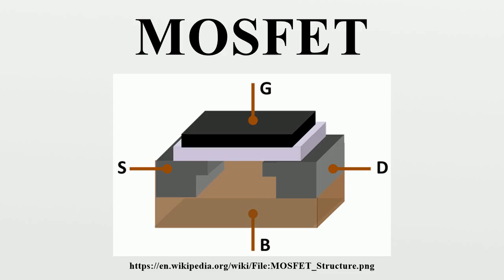When a voltage is applied between the gate and body terminals, the electric field generated penetrates through the oxide and creates an inversion layer, or channel, at the semiconductor-insulator interface. The inversion channel is of the same type, P-type or N-type, as the source and drain, and thus it provides a channel through which current can pass. Varying the voltage between the gate and body modulates the conductivity of this layer and thereby controls the current flow between drain and source. This is known as enhancement mode.